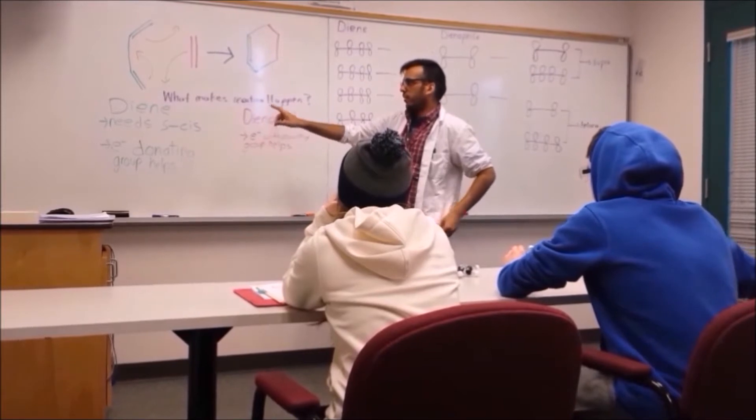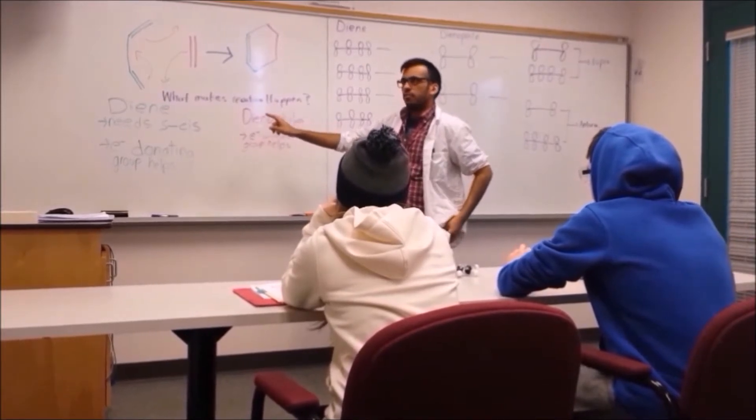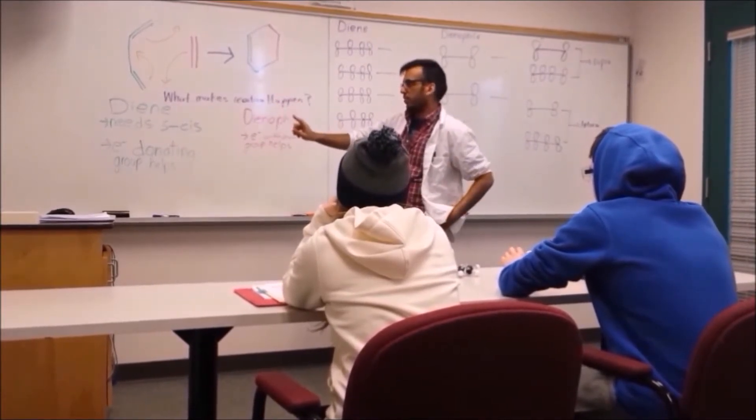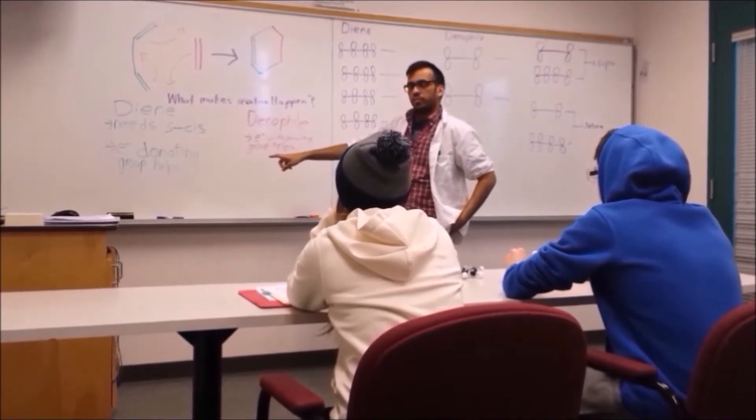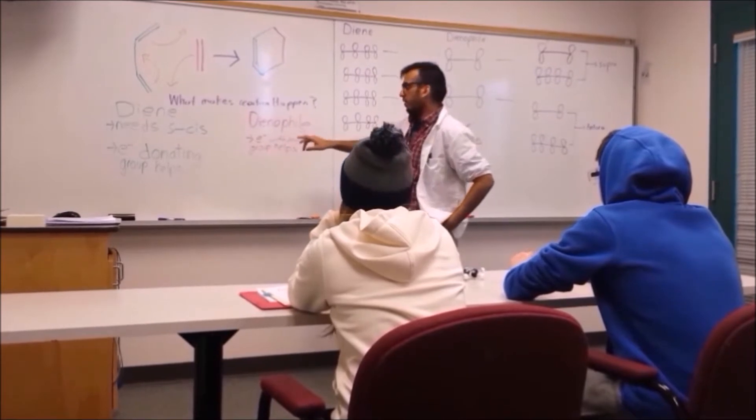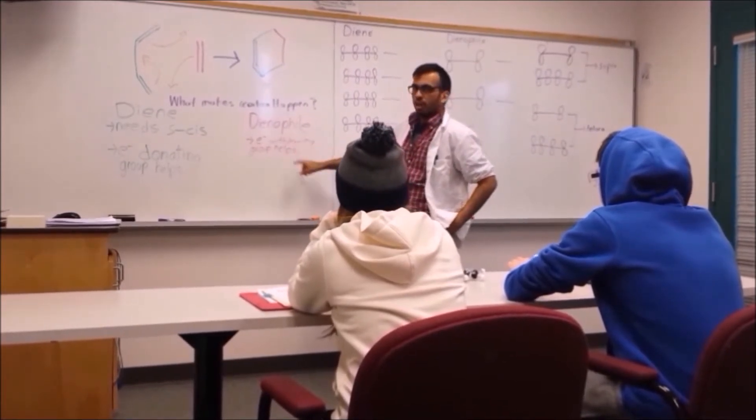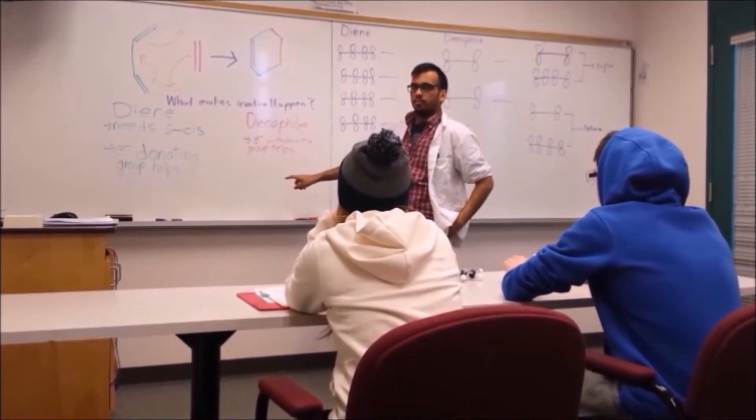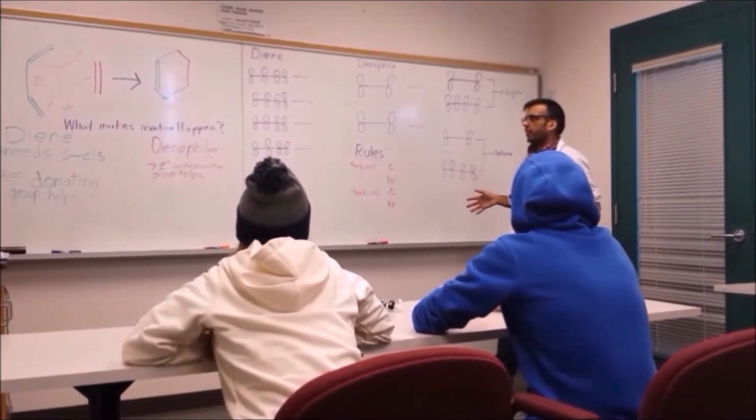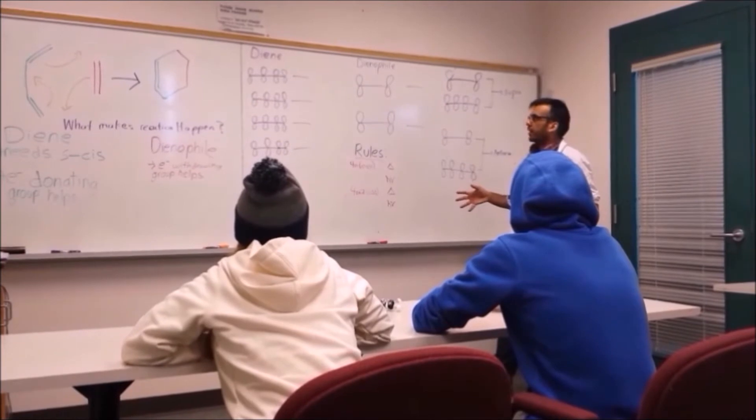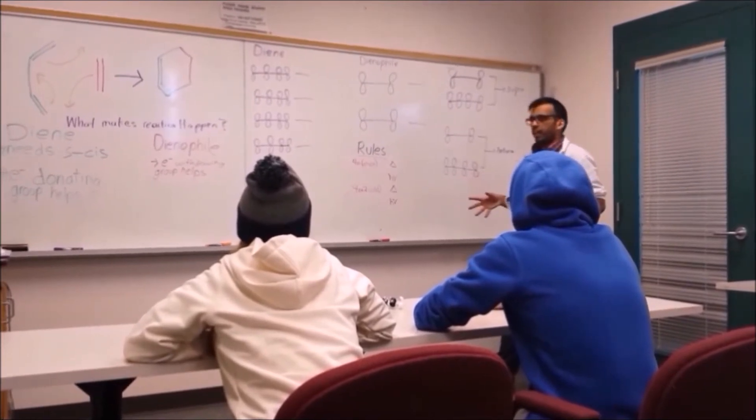It will not happen if the diene is in the S-trans conformation, which is double bonds opposite planes. On the diene, if we have an electron donating group, that can help speed up the reaction. And for the dienophile, if we have an electron withdrawing group, that can help speed up the reaction. This reaction is essentially driven by the orbitals of the diene and the dienophile, and how they line up.